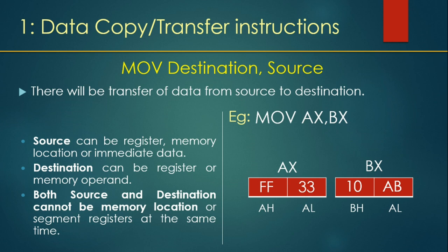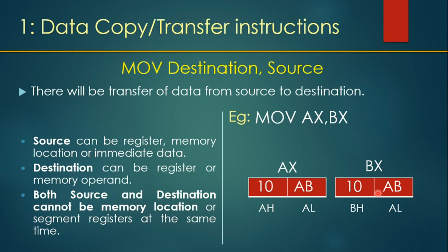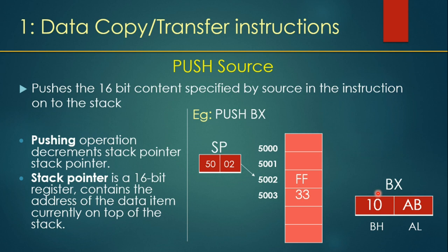The example is MOV AX, BX. What is going to happen is that data of BX is getting copied to AX. AX has some data and that will be overwritten with the data of BX. In the example, AX has FF33 and BX has the data 10AB. After the instruction is executed, FF33 is overwritten by 10AB and the data has been copied to the AX register.